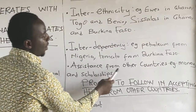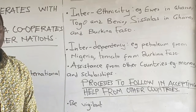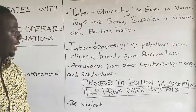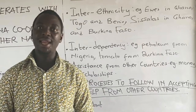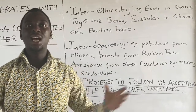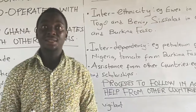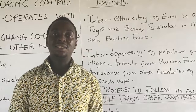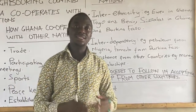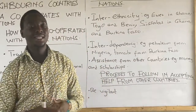The next reason is assistance from other countries. For Ghana to get assistance from other countries, this is also a key reason why Ghana has to cooperate with other nations. Assistance comes in terms of difficulties like disease outbreaks and financial needs. For example, we do see doctors from Cuba come to assist our doctors in Ghana, and Ghana also sends nurses to assist other countries.